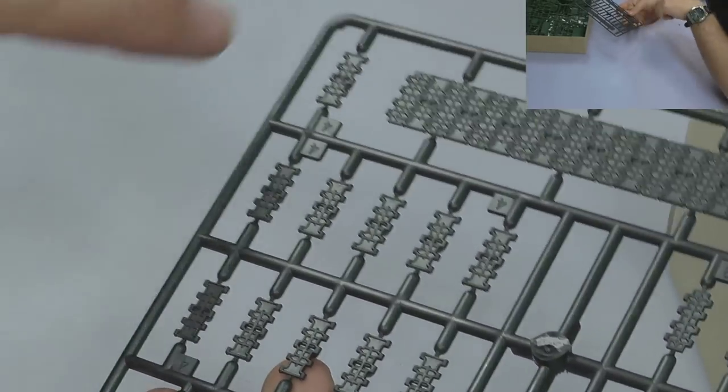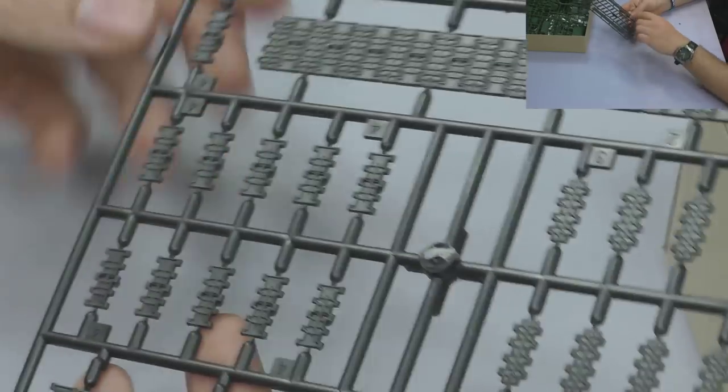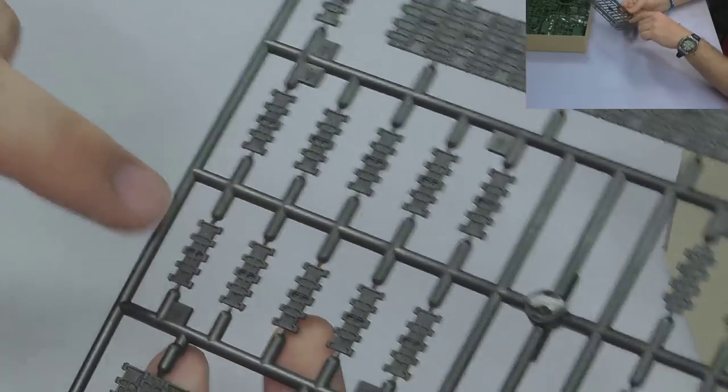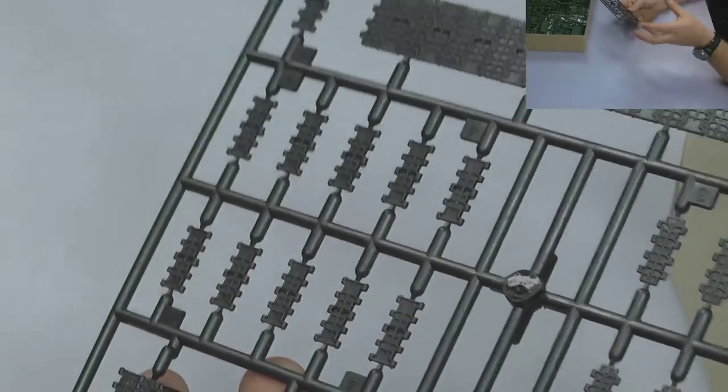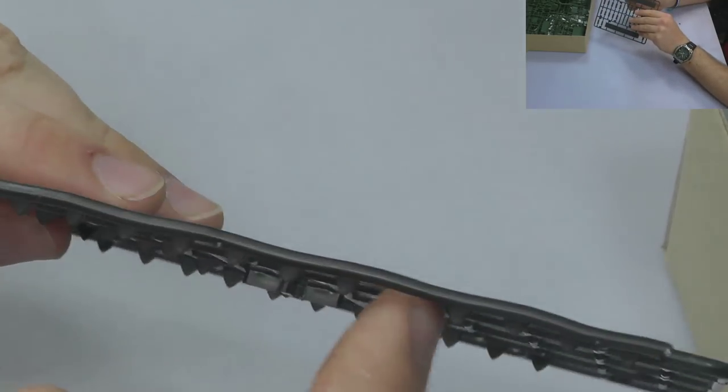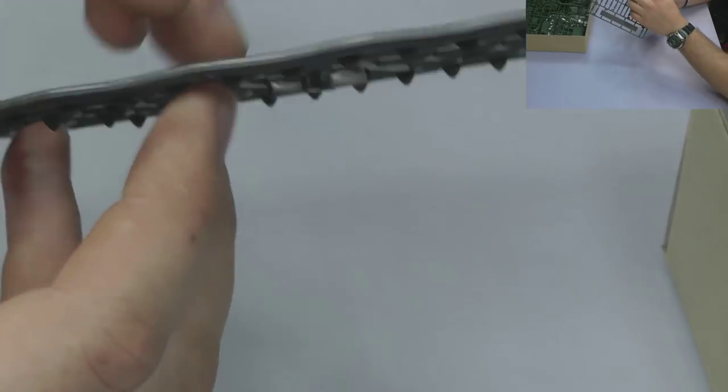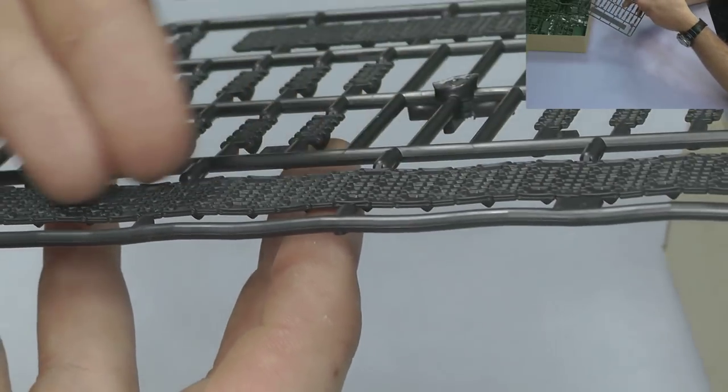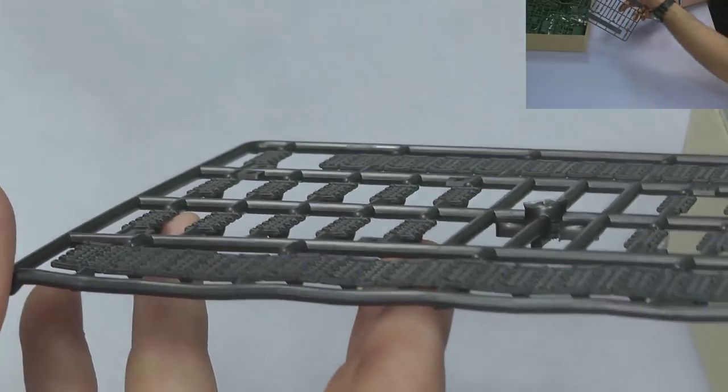I either like those all-in-one sort of rubber tracks or I personally like just lots of individual links that you stick them all together and you can really customize how you have the tracks. But with this, that is it. It is fixed in that position. It does have a bit of a nice bit of realistic sort of wave to it so it's not going to be just flat and look a bit unrealistic.